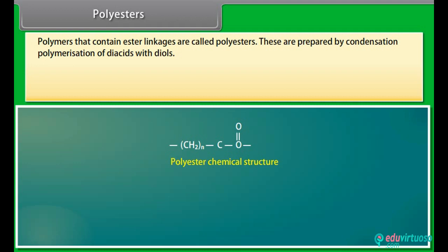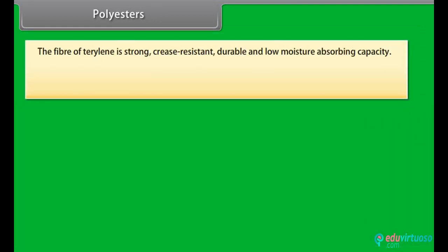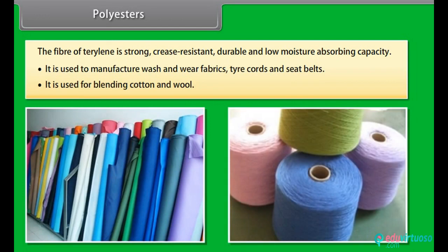Polyesters are prepared by condensation polymerization of diacids with diols. Terylene/Dacron: it is prepared by condensation polymerization of ethylene glycol and terephthalic acid. The polymerization is carried out at about 420–460 K in the presence of a catalyst consisting of zinc acetate and antimony trioxide. The fiber of terylene is strong, crease-resistant, durable and has low moisture-absorbing capacity. It is used to manufacture wash-and-wear fabrics, tire cords and seat belts, and for blending with cotton and wool to provide better finish and increase resistance to wrinkles and wear and tear.